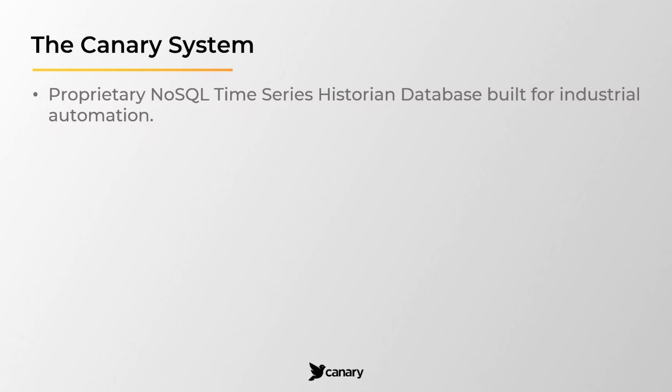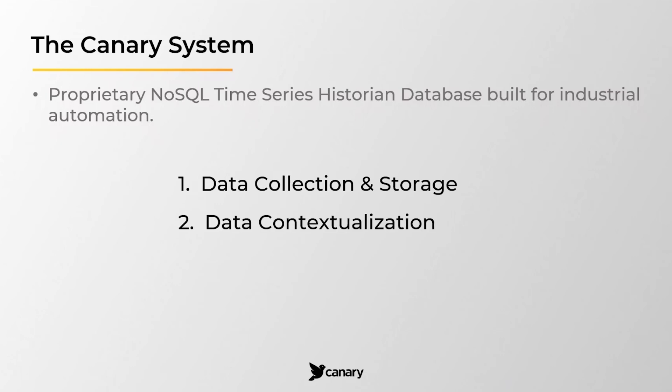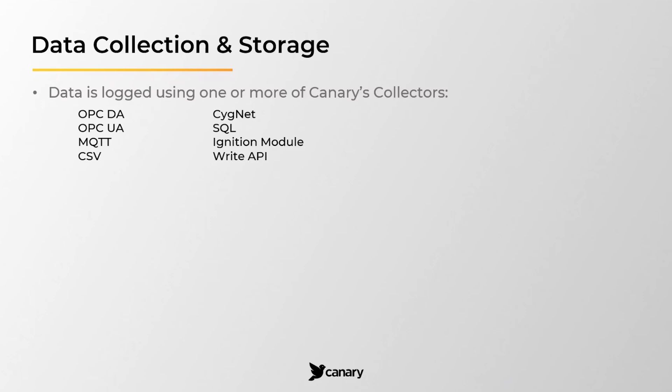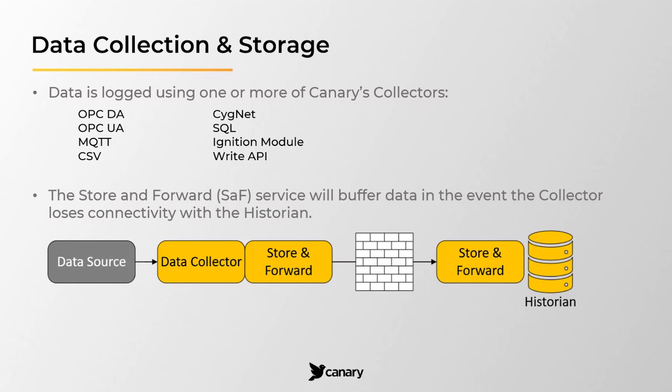The system can be divided into three general categories: data collection and storage, data contextualization, and reporting. Data is logged using one or more of Canary's collectors and is transported to the historian using its store and forward service. This service is responsible for buffering data to disk in the event the collector loses connectivity with its destination.